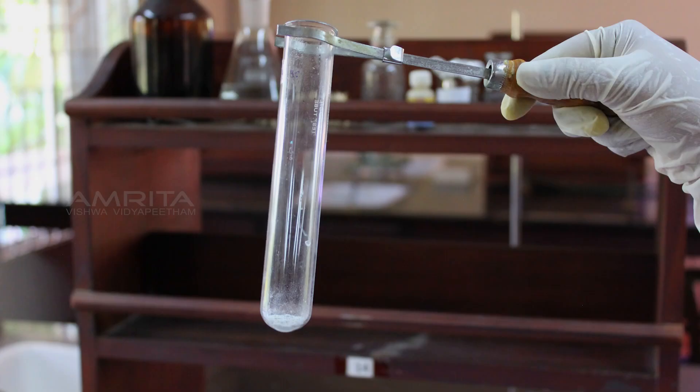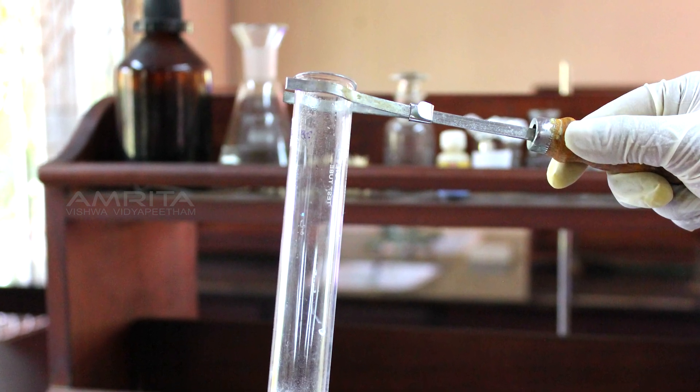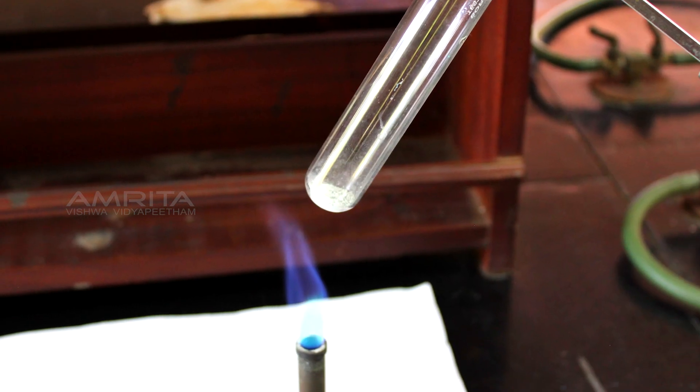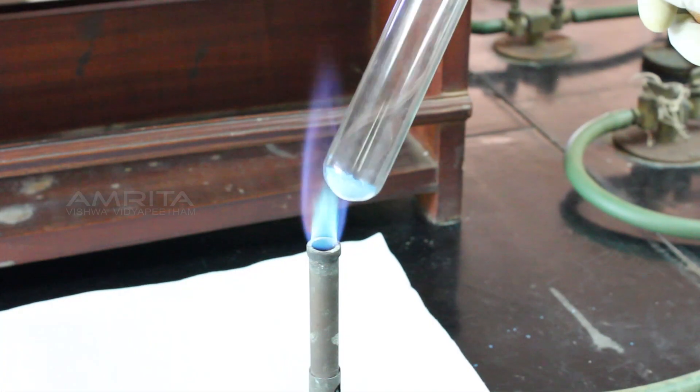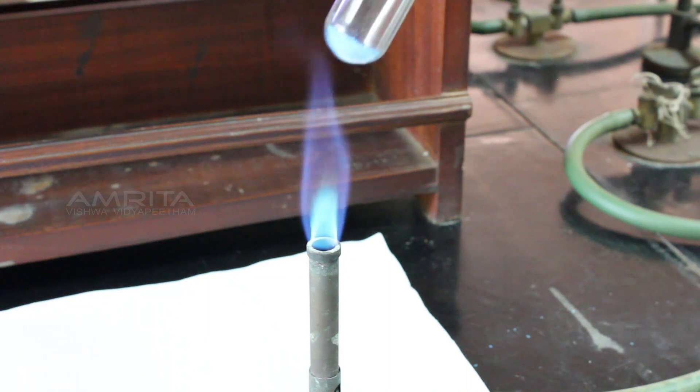Precautions: Always use a test tube holder while heating the test tube. Take only a small quantity of copper sulphate crystals for heating over the flame of the burner.